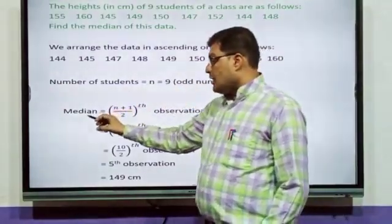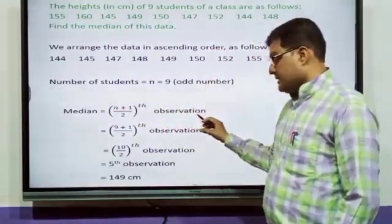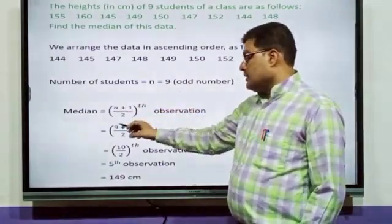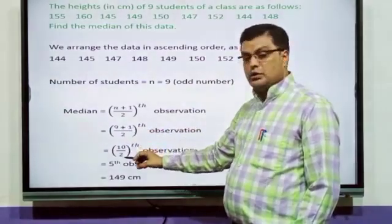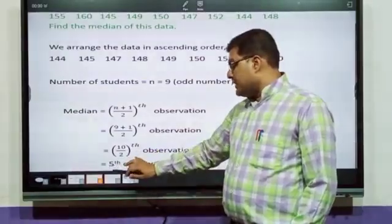So, the formula of median equals (n+1)/2th observation. We have to put the value of n. The value of n we got is 9. So, (9+1)/2. 9 plus 1 is 10 upon 2 observation. 10 upon 2 when we cancel, we will get 5th observation.